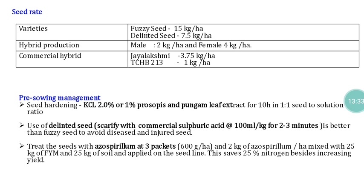Wash the seeds four to five times to ensure complete removal of the acid. After this delinting process, the seeds will have a black-colored seed coat, completely free from any lint. This is a very important operation. The advantage of delinting is that you remove the sponge material (lint) from the seeds — lint is a very good place for survival of pathogens and insects. It is a conducive environment for their survival.